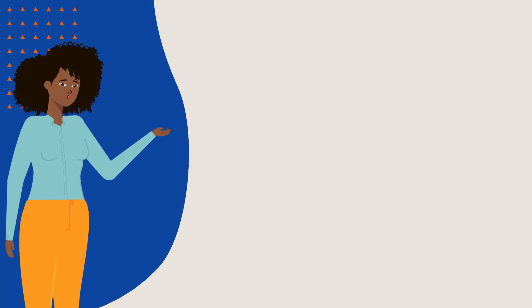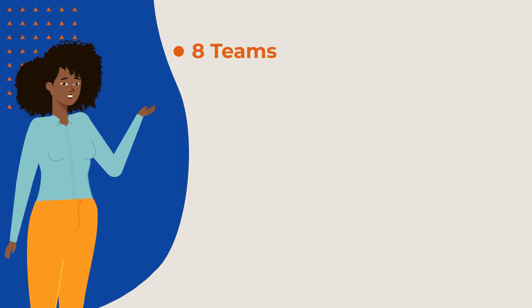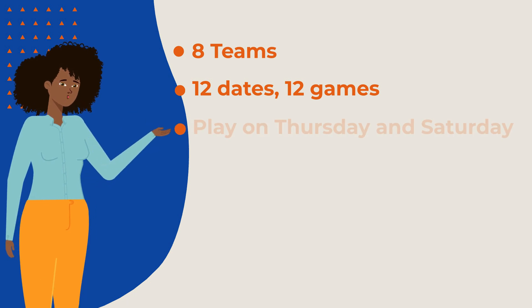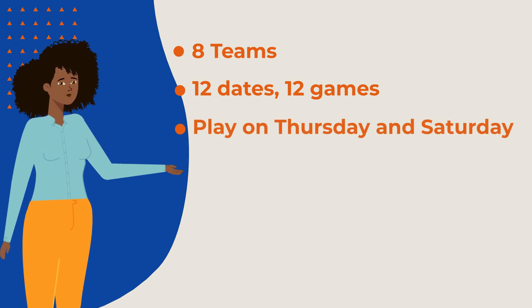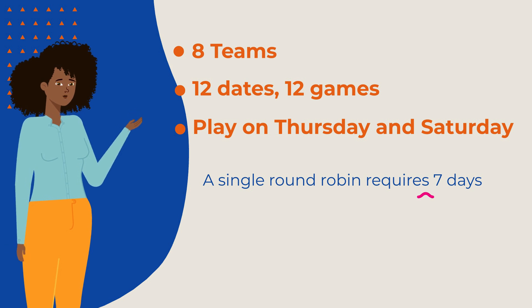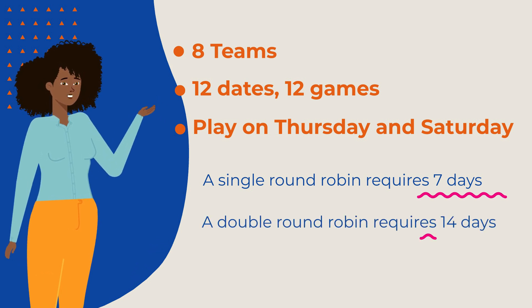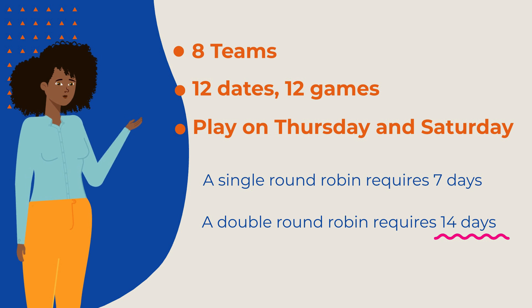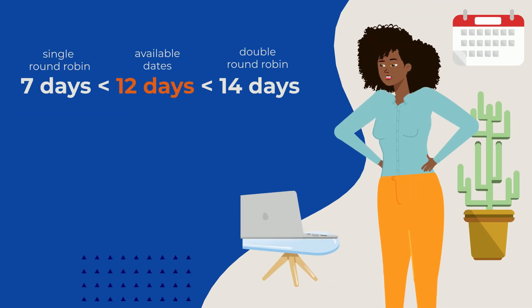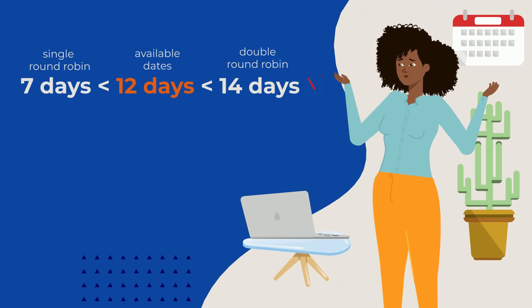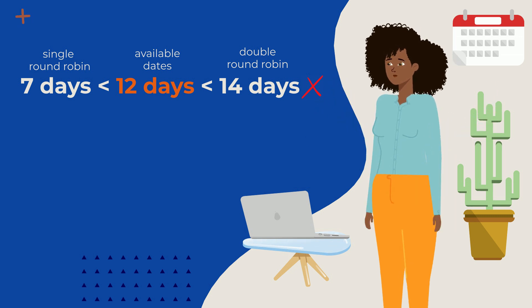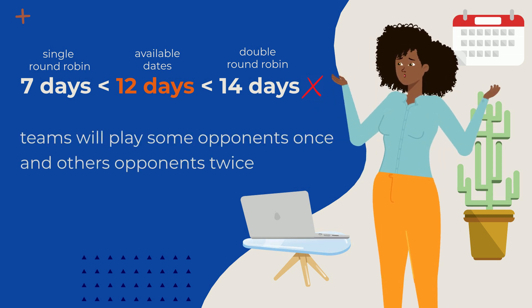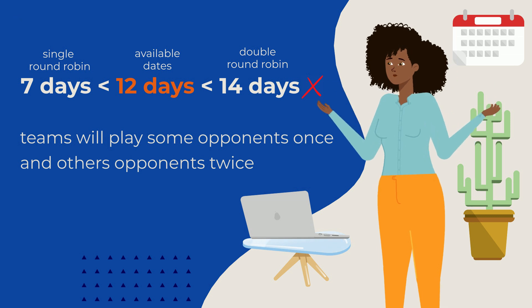Let's consider a scenario where we have eight teams. These teams will play a total of 12 games throughout the season on Thursdays and Saturdays. An eight-team competition will complete a round robin cycle in seven games, so we have enough game dates for a single round robin but not enough for a double round robin. This means all teams will play some opponents once and other opponents twice.